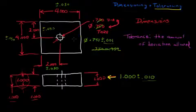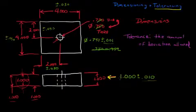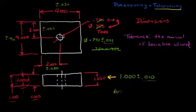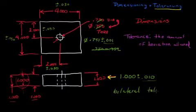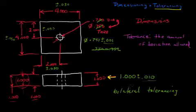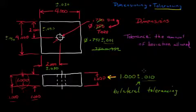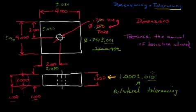What we've shown here — these plus or minus thirty, plus or minus thirty, plus or minus thirty, plus or minus one, plus or minus ten — we call that bilateral tolerancing. That's just another fifty-cent word which means two directions. These tolerances go plus or minus, and they're equal amounts — plus or minus ten.